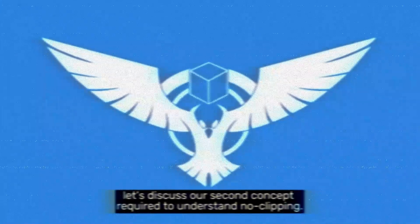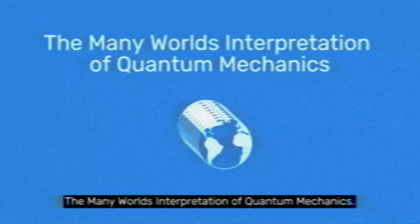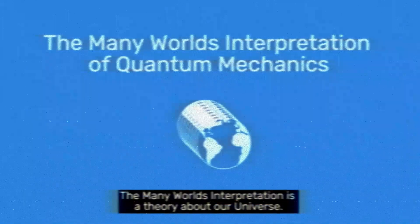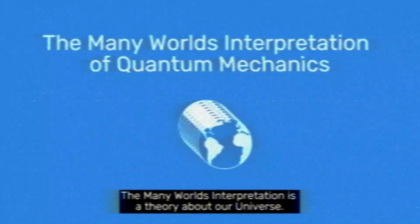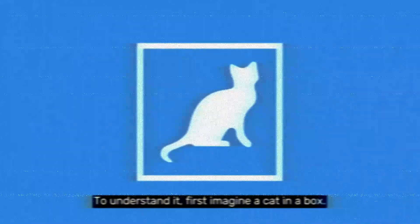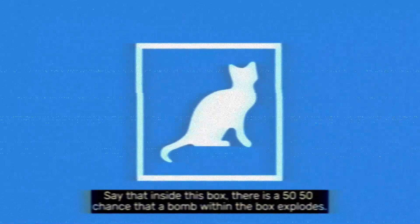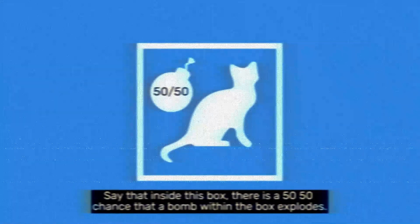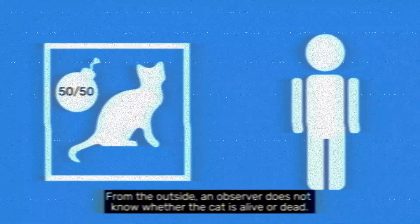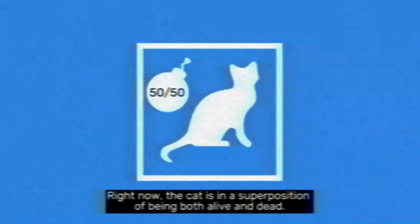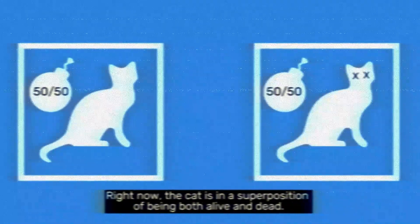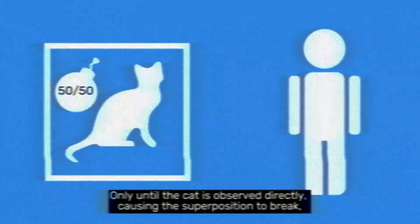Now that you know the basics of this phenomenon, let's discuss our second concept: the many worlds interpretation of quantum mechanics. To understand it, first imagine a cat in a box — this is known as Schrödinger's cat. Say that inside the box there is a 50/50 chance that a bomb explodes. From the outside, an observer does not know whether the cat is alive or dead. Right now the cat is in a superposition of being both alive and dead. Only until the cat is observed directly, causing the superposition to break, do you know for sure the outcome.